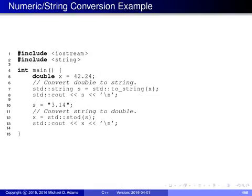A second code example illustrates numeric conversion functions. After including <string>, a double variable x is set to 42.24 and converted to a string using to_string(x), then printed. A string variable is then initialized to "3.14" and converted back to a double using stod(), assigning the result to x, which is then printed.